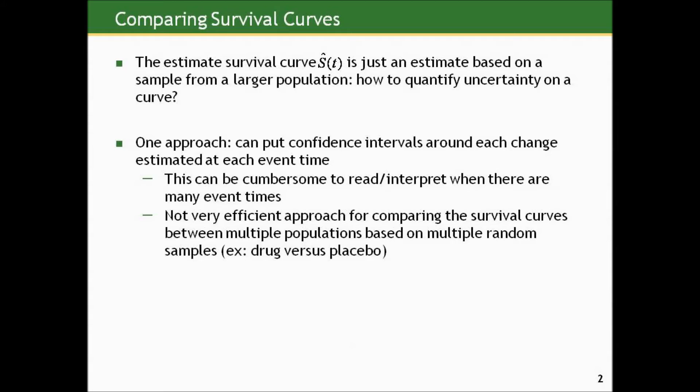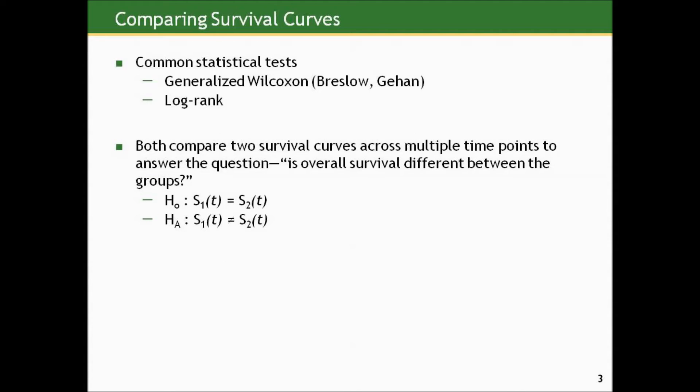The two most common ones you'll see in the literature are doing the same thing just slightly differently. One is called the generalized Wilcoxon test, sometimes also called the Breslow or Gehan test — you'll see it referred to by any permutation of those names. The other one you'll see very often is called the log-rank test. Both compare the two survival curves across multiple time points to ultimately answer the question: is the overall underlying time-to-event experience different between the two groups or not?